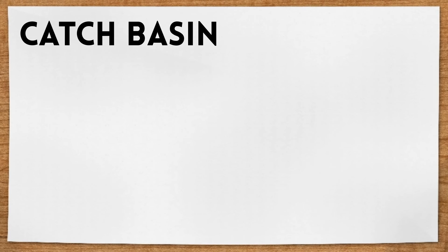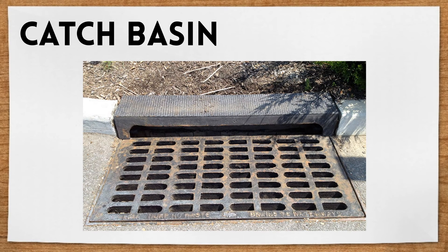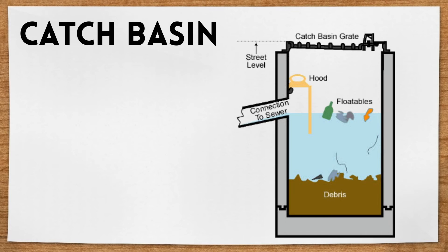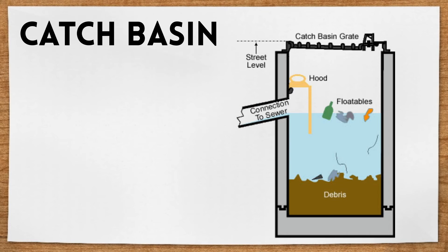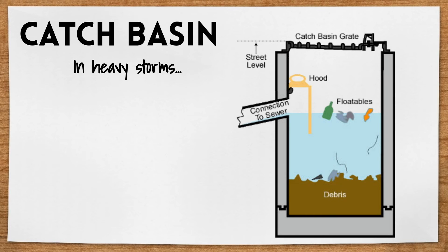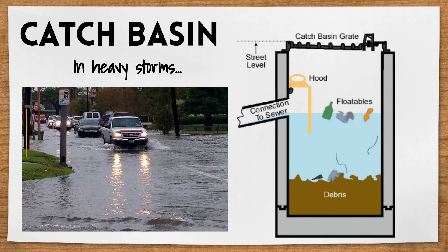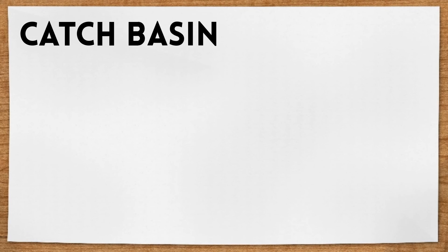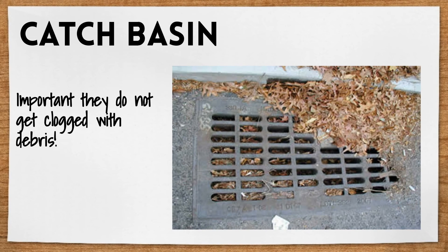A catch basin is one of these things — I know you've seen them in the street before. This is the grate you see at street level. When it rains, the water falls through the grate along with any debris, and there's an outlet connected to the storm sewer system to let the water out as it fills up. In a heavy storm, it is possible that the city storm sewer system gets overwhelmed and the basin fills up faster than it can release the water — that's when we see flooding in the streets happen. It's important to make sure that these basins do not get clogged with debris, because this raises the potential for flooding dramatically.